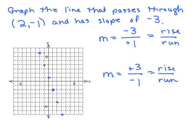A common mistake is to use the slope starting from the origin — make sure you don't do that. Always start from the point that's definitely on the line, which here is 2, negative 1. The last step is to connect the dots and draw the line. To review: plot the point, write the slope as a fraction, and use rise over run to find more points on the line.